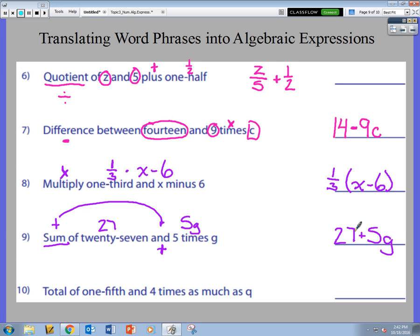Again, this also has two terms. 27 is one term, the 5g is the other. The terms are separated by this plus sign. The 5 is our coefficient, the g is our variable. Together they are factors because we're multiplying them together.